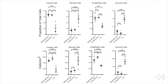We applied our KidneyMAPS pipeline to several kidneys with tumor-associated interstitial nephritis and found that, as expected, there was a higher proportion of immune and stromal cells in injury as compared to histopathologically normal nephrectomy and living donor tissue. As well, the number of tubular and endothelial cells, both as a proportion of total cells as well as per square millimeter, decreased in injury.